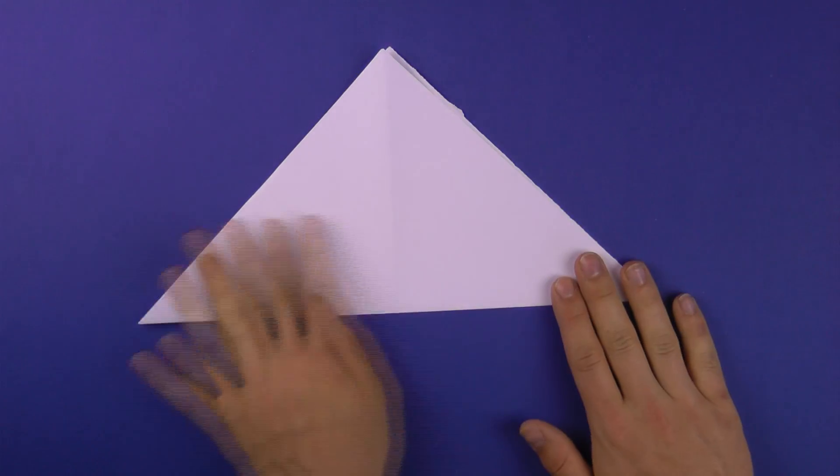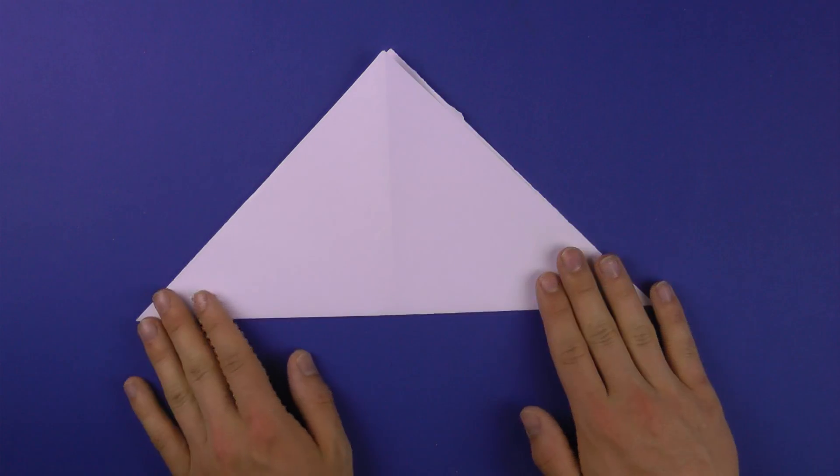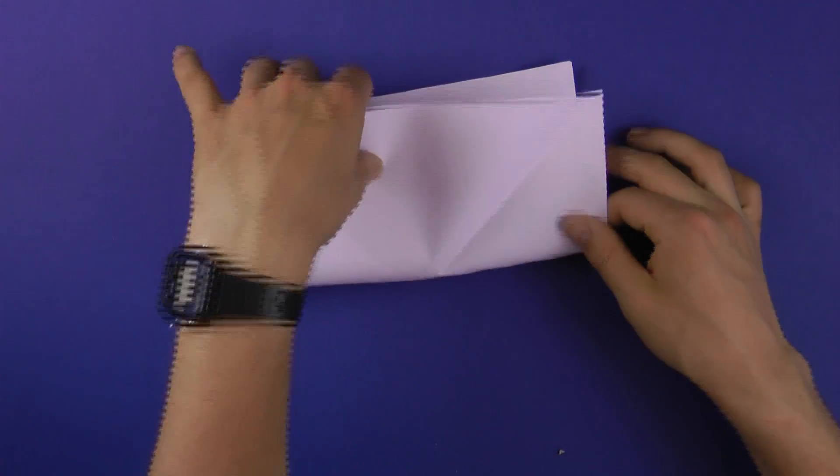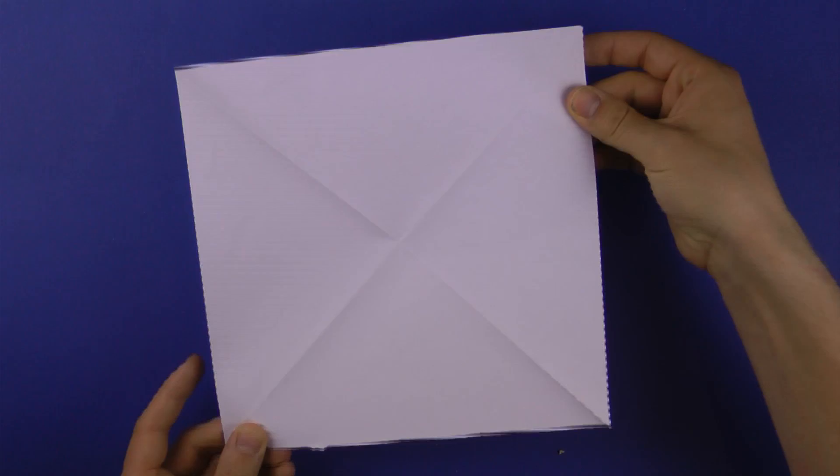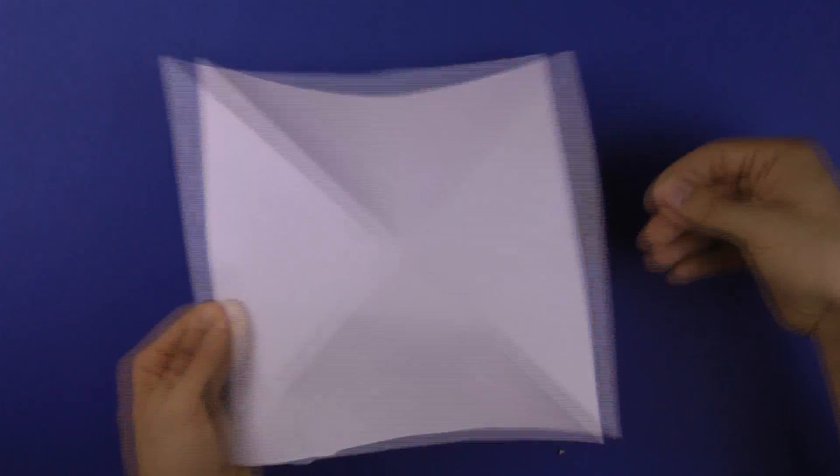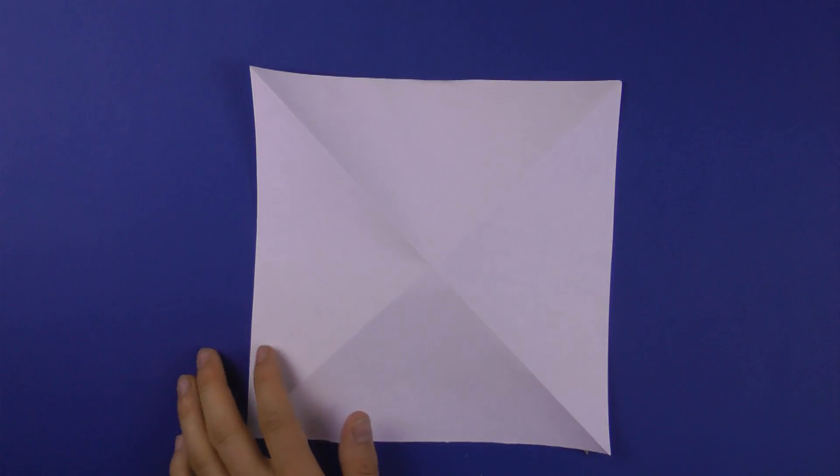And if you look closely here you can see there is some paper left over. This is because it's not a perfect square and that is all right. For maneuvers like a water bomb base it's much more important that the corners are connected than the edges align.